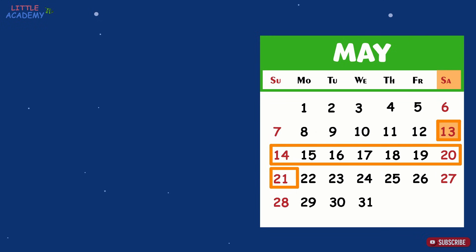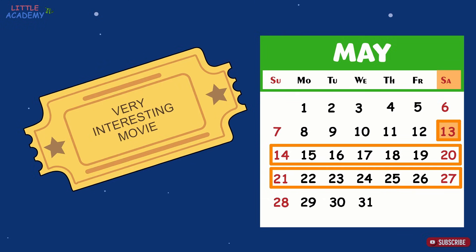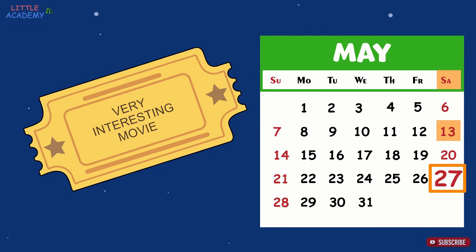If we find out that in two weeks an interesting movie comes out, then looking at the calendar we can see that in two weeks it will be the 27th of May, so we need to order the tickets for Saturday, May 27th.